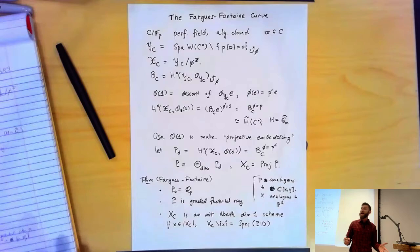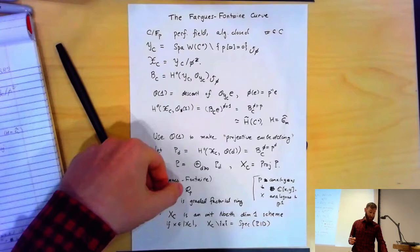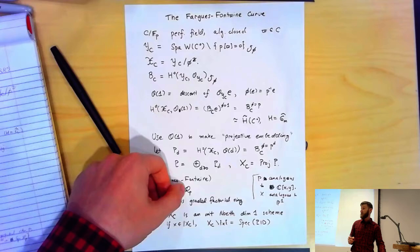So X_C, even though it had these very alien origins, is something familiar — it looks like P^1 — but with one huge difference: this curve is not of finite type over any particular field. There exists a map from it to Spec Q_p, but that map is very far from being finite type.